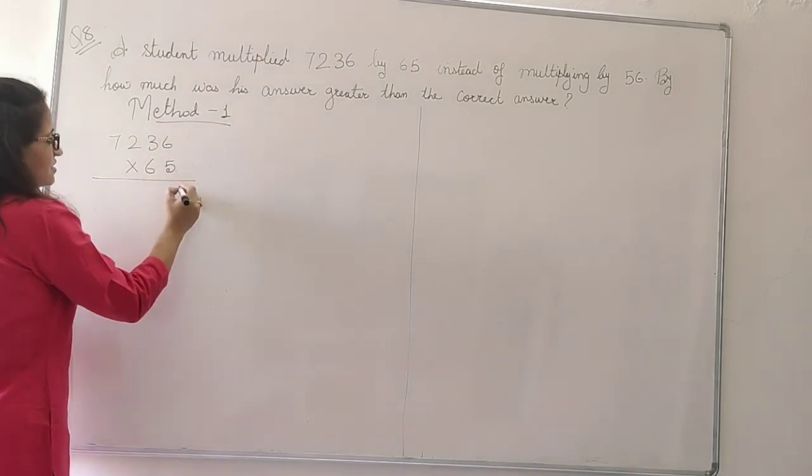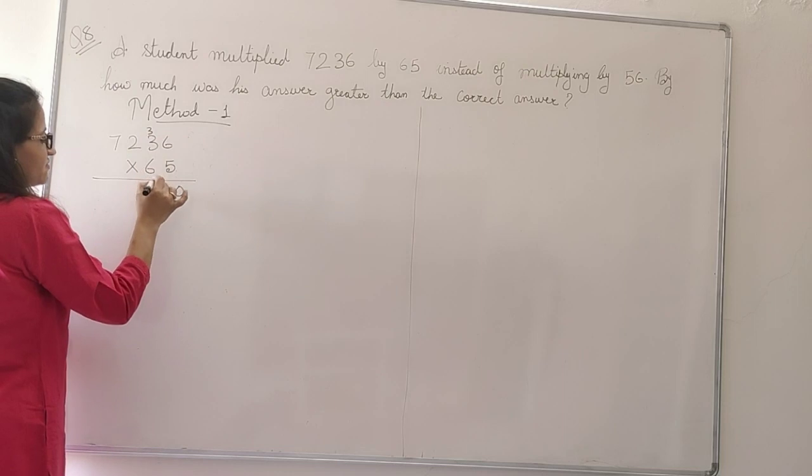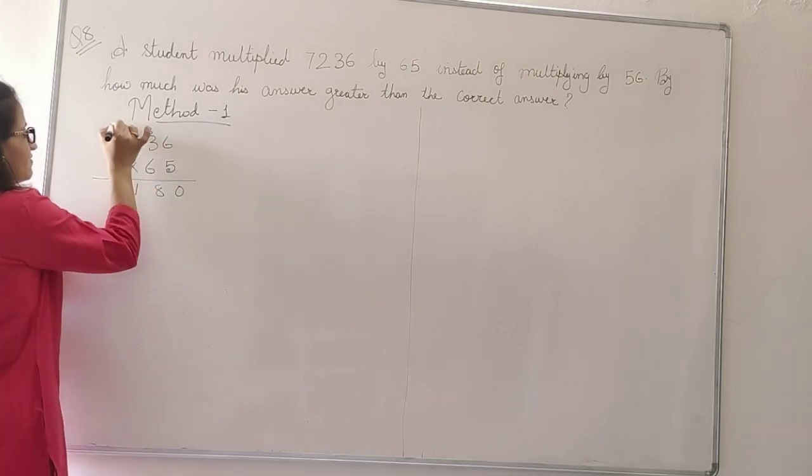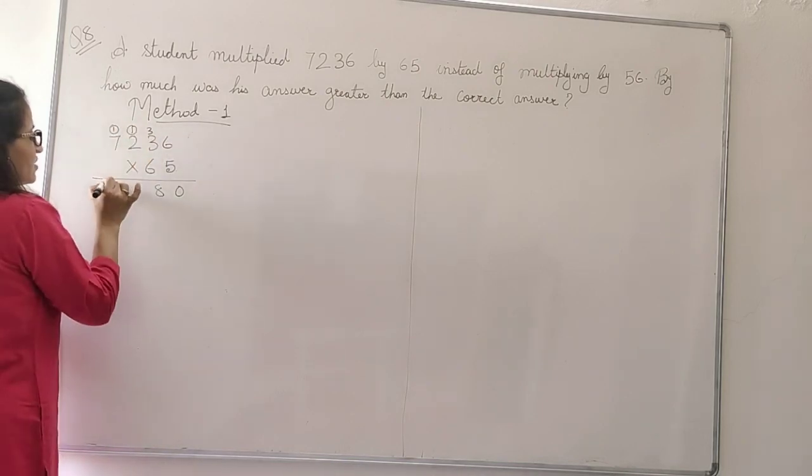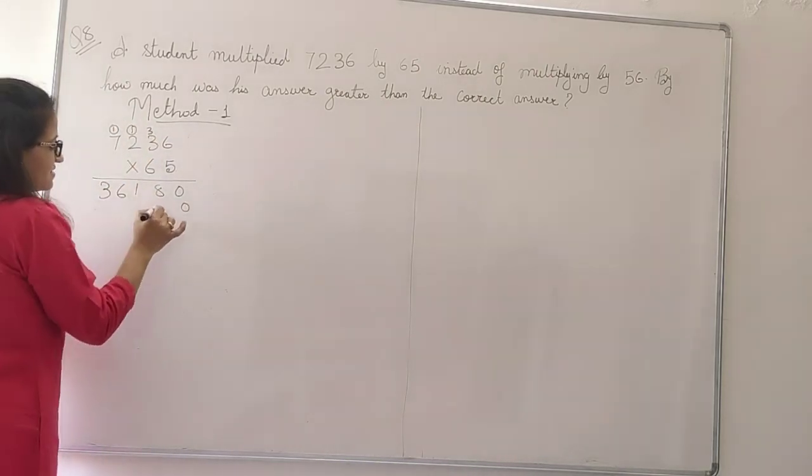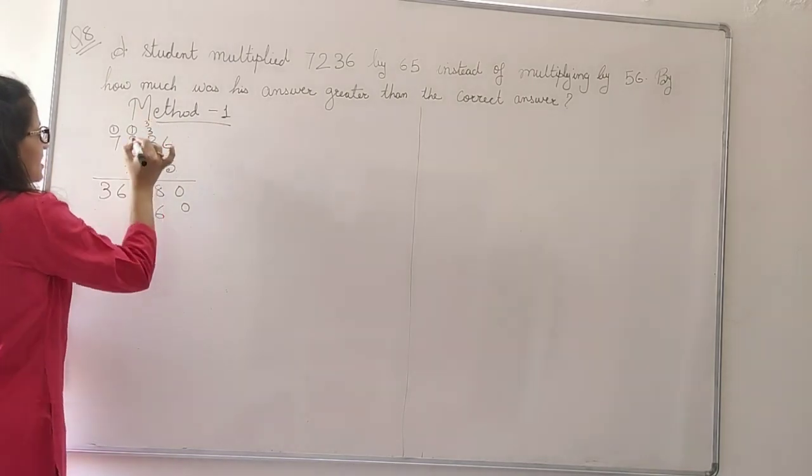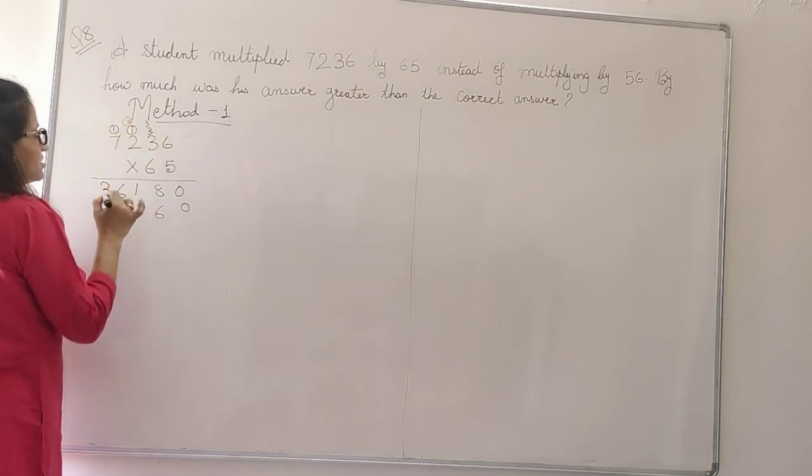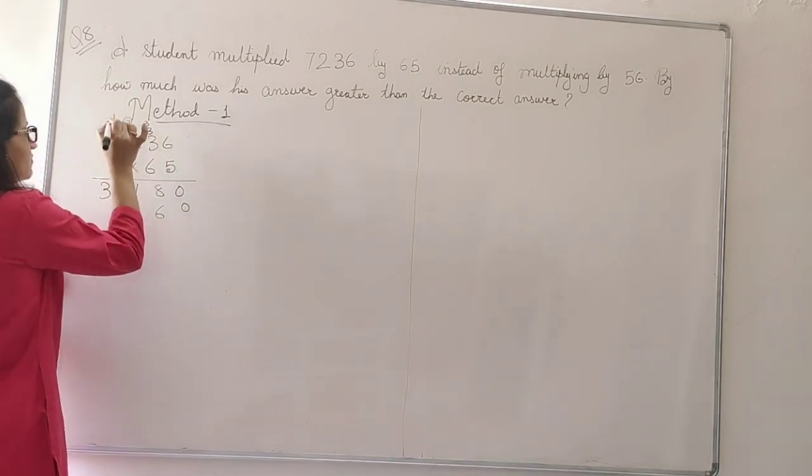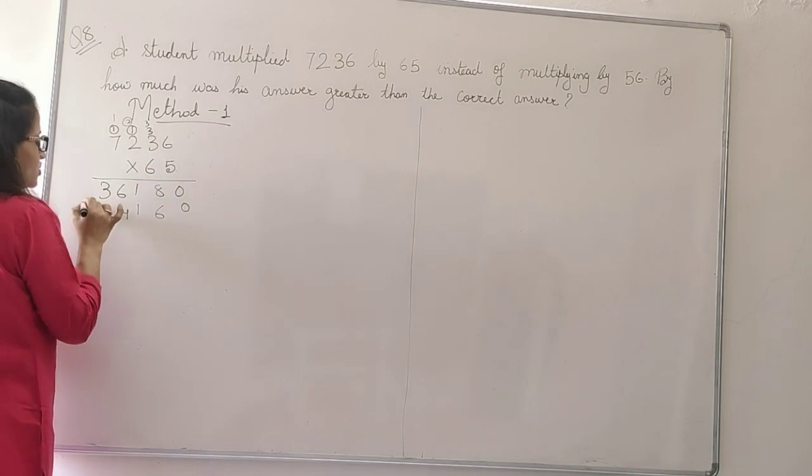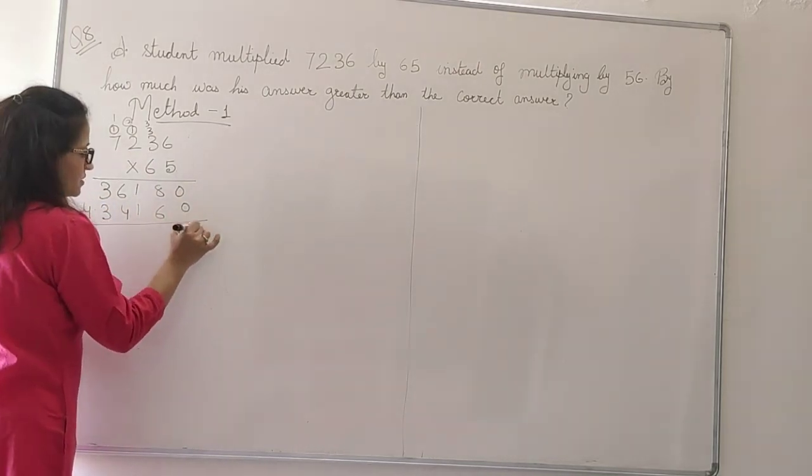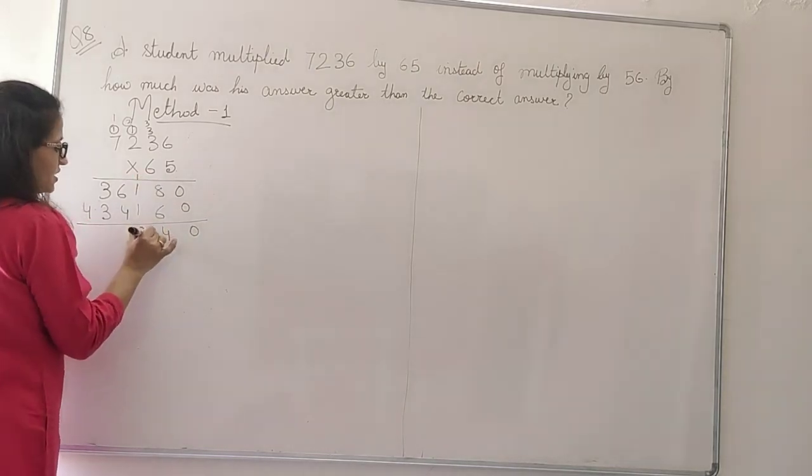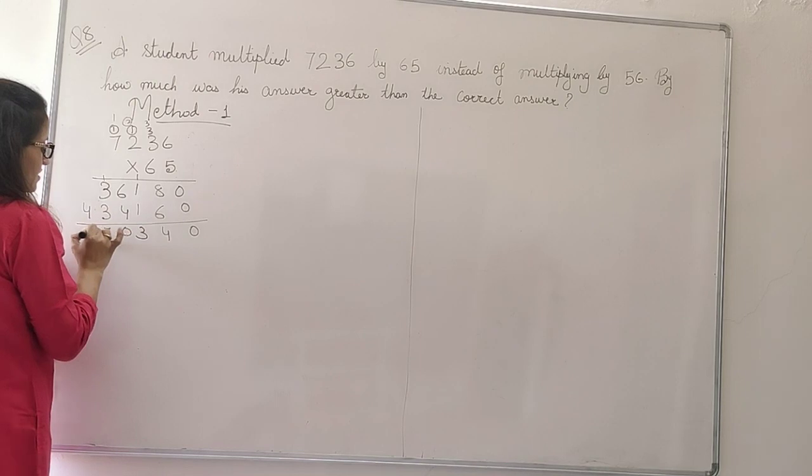First 5, 6 are 30, 3 carry over. 5, 3 are 15 plus 3, 18. 1 carry over. 5, 2 are 10 plus 1, 11. 5, 7 are 35 plus 1, 36. 6, 6 are 36, 3 carry over. 6, 3 are 18, 21. 2 carry over. 6, 2 is 12, 14. 1 carry over. 6, 7 are 42, 43. 3, 0, 8 plus 6, 14, 3, 6 plus 4, 10, 7, 4.